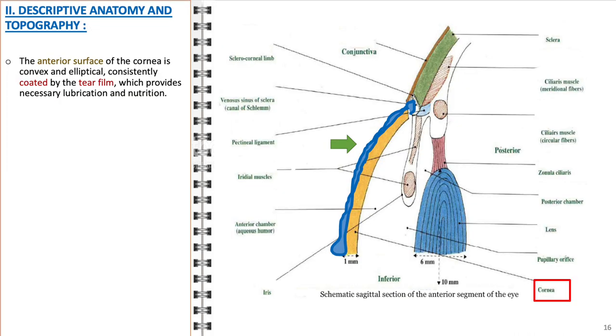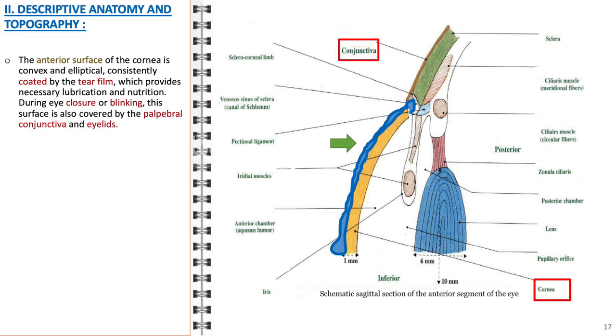The anatomical structure of the cornea showcases a distinct contrast between its anterior and posterior surfaces. The anterior surface is convex and shaped elliptically, a form that plays a crucial role in focusing light. It is continuously coated by the tear film, providing essential lubrication, nutrition, and protection against infection. During the natural actions of blinking or eye closure, this surface is also covered by the palpebral conjunctiva and eyelids, offering protection and helping to spread the tear film evenly across the cornea.